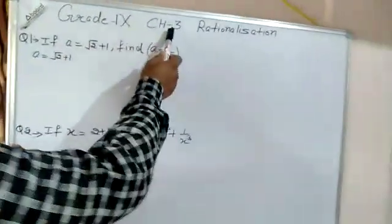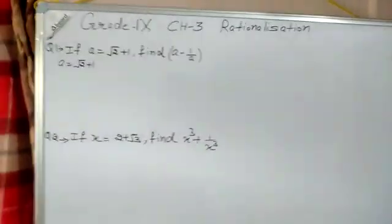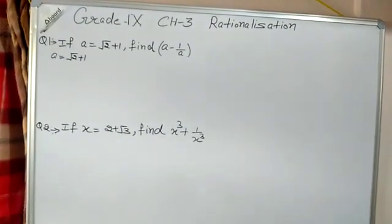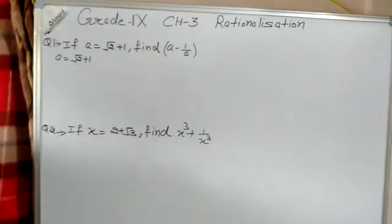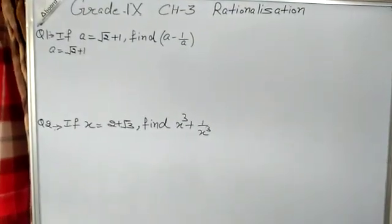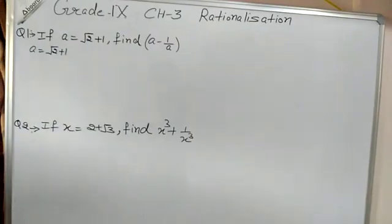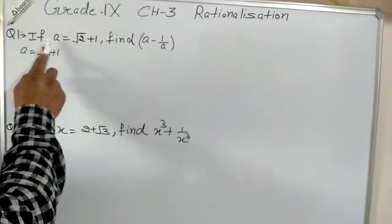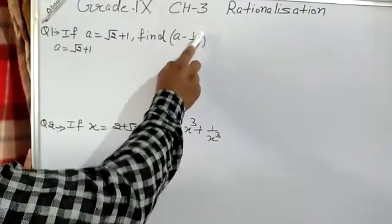Good morning students. Let us start Grade 9, Chapter 3 Rationalization, Part 3. Today we are going to learn how we can solve some questions after using rationalization. Already we all know how to apply rationalization. So by the process of rationalization, we try to solve some questions. Here is our first question: if a is equal to √2 + 1, find a − 1/a.